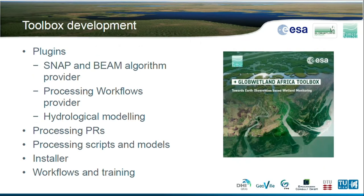What did we do to develop the toolbox? A lot of the work was already done for us because of the Sextante or later processing toolbox which already existed in QGIS. But we had to fill in some gaps in the functionality, and we did it by developing QGIS plugins mostly — there is a provider for algorithms coming from the Snap and Beam software, there's the workflow provider, and we did some hydrologic modeling scripts as well. Throughout the development of the toolbox, we were quite active users of the processing toolbox and also looking at the code. Whenever we found bugs or missing features, we did pull requests into the QGIS project.